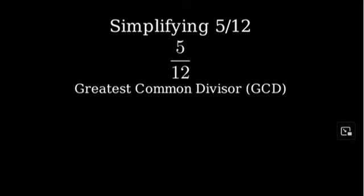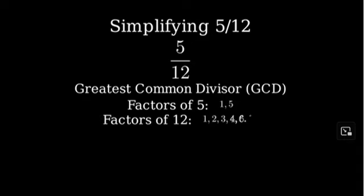Let's start with 5. The factors of 5 are 1 and 5. Now for 12, its factors are 1, 2, 3, 4, 6, and 12.